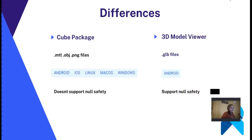What are the differences between the Cube package and the 3D Model Viewer? The Cube package uses MTL, OBJ, and PNG files — so we have to download these files. The Model Viewer only requires downloading the GLB files. The Cube package supports Android, iOS, Linux, macOS, and Windows. The 3D Model Viewer only supports Android. The Cube package doesn't support null safety, but the Model Viewer does support null safety.